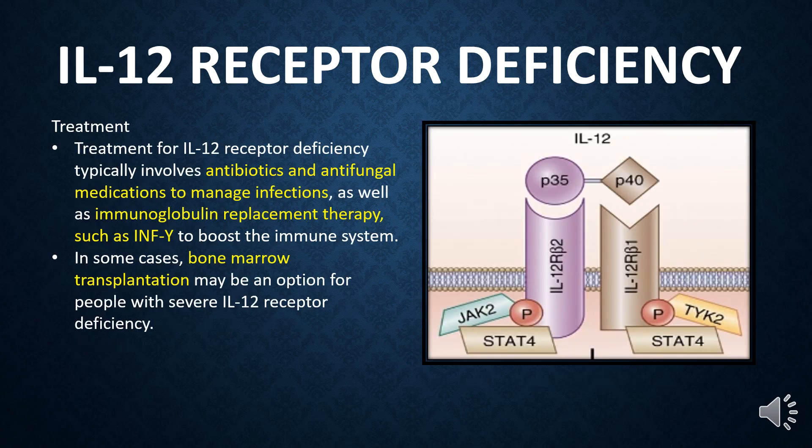Treatment for IL-12 receptor deficiency typically involves antibiotics and antifungal medications to manage infections, as well as immunoglobulin replacement therapy to boost the immune system, such as a supplement of interferon gamma. In some cases, bone marrow transplantation may be an option for people with severe IL-12 receptor deficiency.